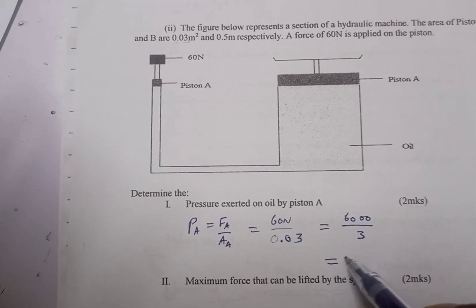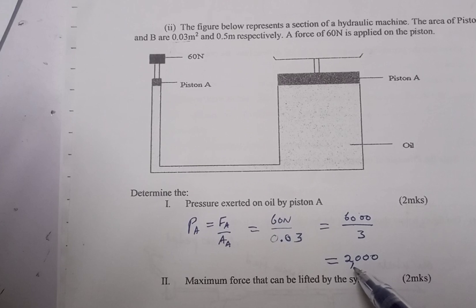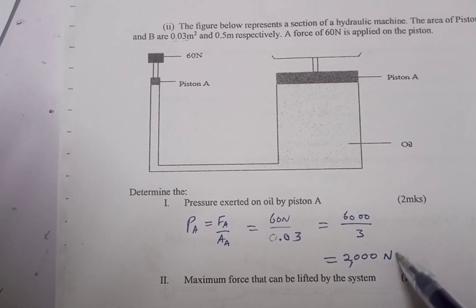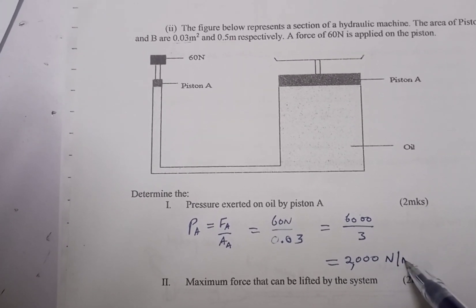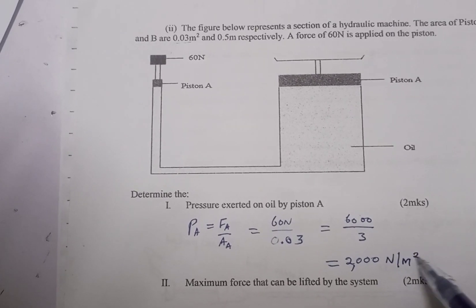Then maximum force that can be lifted by the system. So pressure at A equals pressure at B.